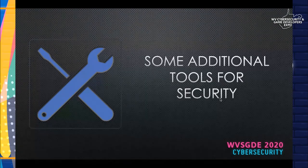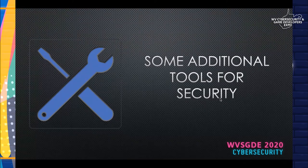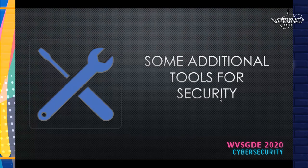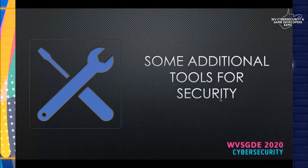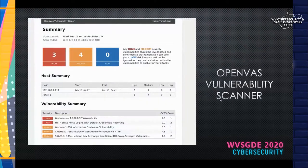Some additional tools for security — going a bit further than yesterday's network scanning with Advanced IP Scanner and NMAP. These tools go more in depth and might take some extra Googling or research before using them. First up: OpenVAS vulnerability scanner.